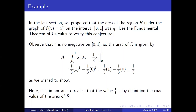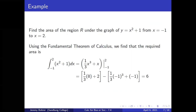In the last section, we proposed that the area of the region R under the graph of f(x) = x² on the interval from zero to one was one third. Use the fundamental theorem of calculus to verify this conjecture. Since f is non-negative on [0, 1], the area of R is A = the integral from zero to one of x² dx, which equals (1/3)x³ evaluated from zero to one, which equals (1/3)(1)³ minus (1/3)(0)³, which is one third, as we wished to show.